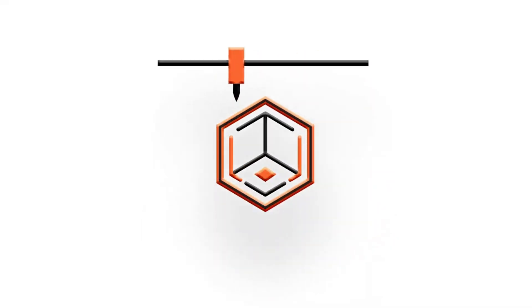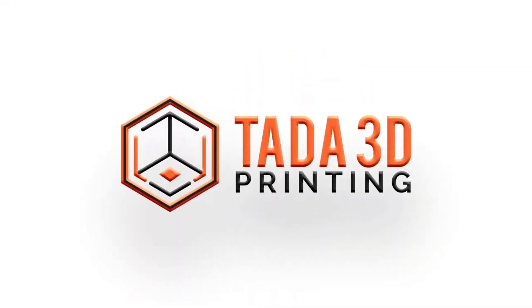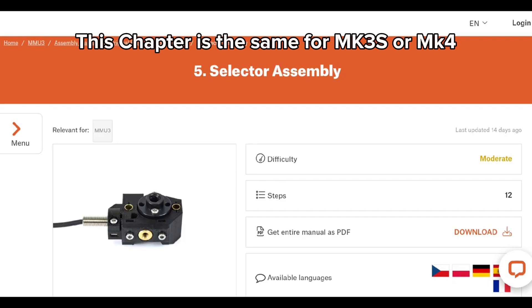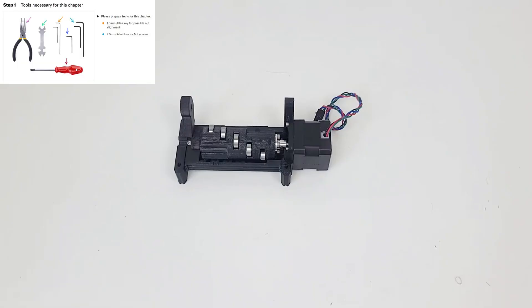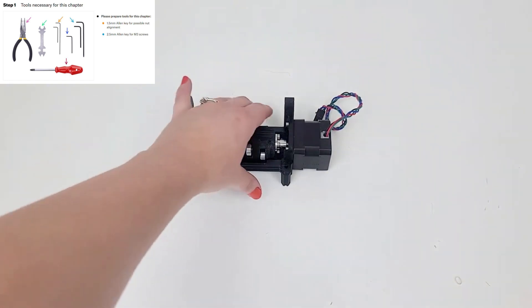Welcome back to Ta-Da 3D Printing. We are on to Chapter 5, the selector assembly. It says that it is moderate on the difficulty and it has 12 steps. We can get that out of our way.